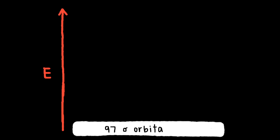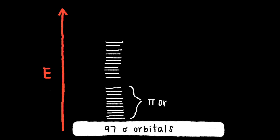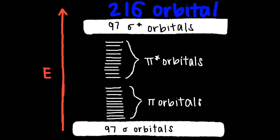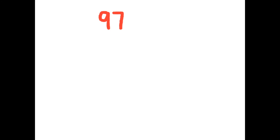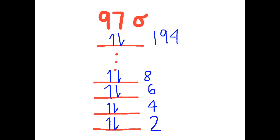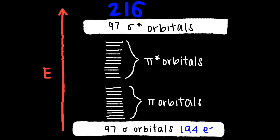Let's start the molecular orbital diagram with an axis of increasing energy. There are 97 sigma-bonding orbitals, which are the lowest energy, followed by 11 pi-bonding orbitals, 11 pi-antibonding orbitals, and 97 sigma-antibonding orbitals. We'll start filling in our molecular orbitals with electrons starting with the sigma-bonding orbitals. Each sigma-bonding orbital can contain 2 electrons, so all sigma-bonding orbitals will be filled using 194 electrons. The remaining 22 electrons will occupy the pi-orbitals, filling up 11 pi-bonding molecular orbitals.